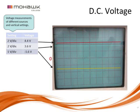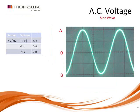Here we see multiple voltages on the screen. At two volts per division, the red line gives a voltage of 4.4 volts, the blue line is 3.6 volts, and the yellow line is minus 1.6 volts. For AC voltage with the control at two volts per division, from zero to point A represents a change of positive four volts — two divisions times two volts per division. Likewise, zero to point B represents minus four volts.